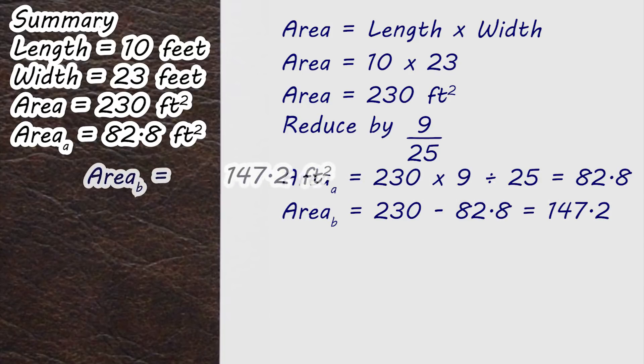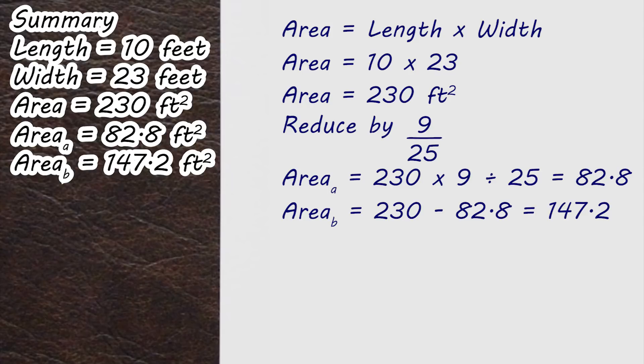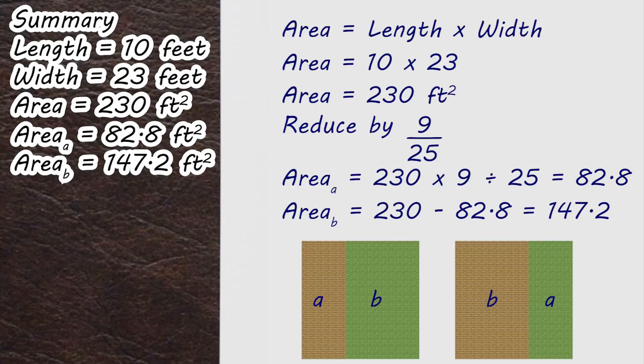Taking this away from our starting area leaves us with 147.2 square feet for our patio. This is where we now see a large part of the ambiguity in the question. Which of these two numbers are we actually looking for? Do we want the 147 or the 82?